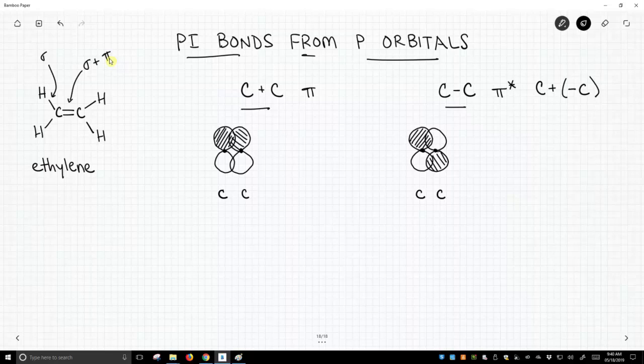Where do pi bonds come from? Well, they come from the overlap of p orbitals. So these carbons, carbon 1 and carbon 2, these are both sp2 hybridized. And if you remember, for sp2 hybridization, we said let's take our s bonds and three p's. Let's mix these together. We will get three sp2 hybrids, and those are what we're going to use to make the sigma bonds. And each of those carbons has three sigma bonds.